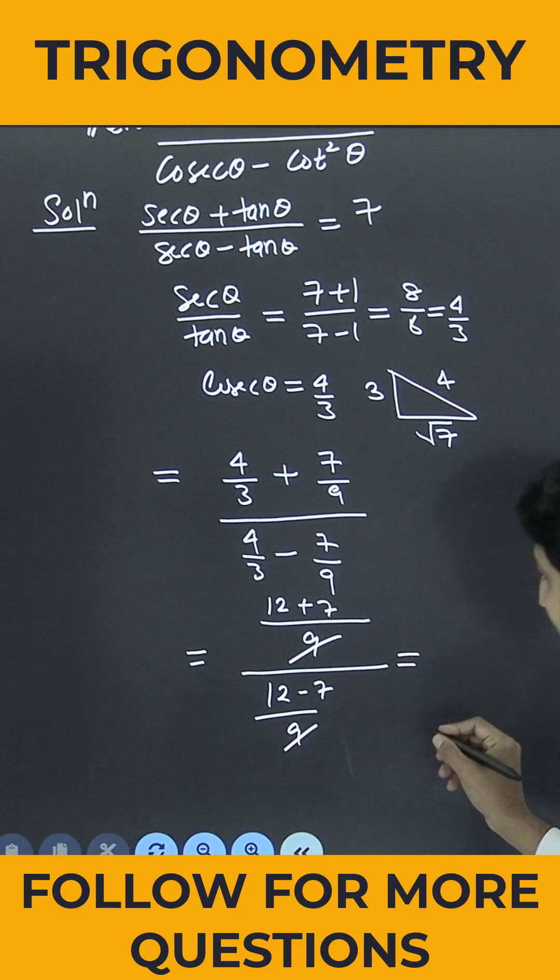9 and 9 cancel. So this comes out to be 19 divided by 5. This is the answer. Thank you.